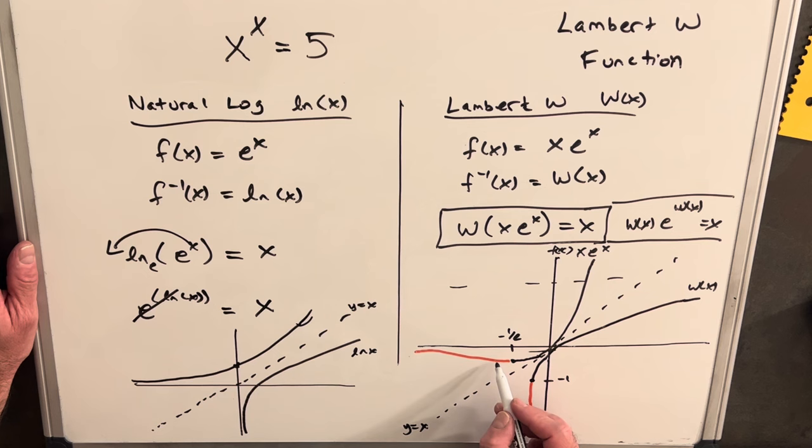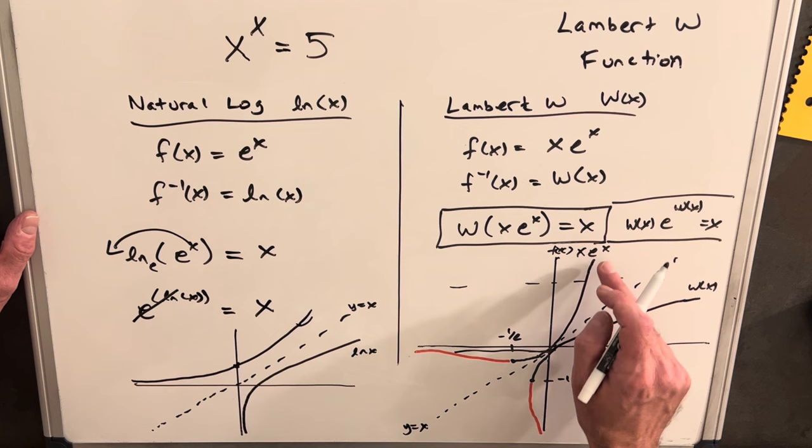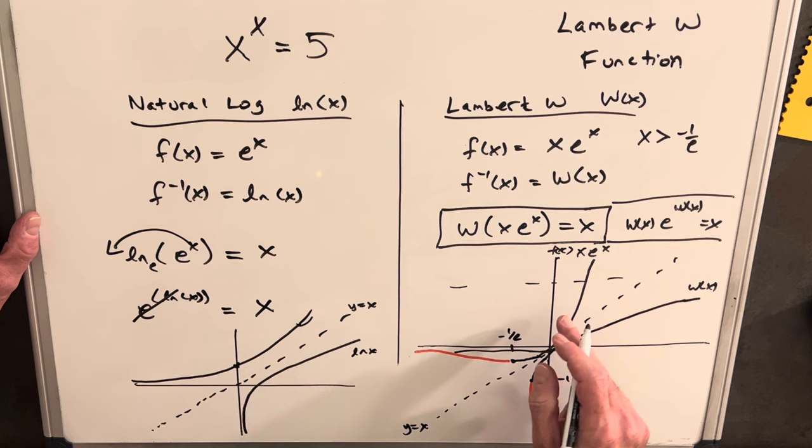And so then if we do our horizontal line test now, we hit at this red line, but I'm saying the red line is something else and we're not considering it. So now we have a function x e to the x, where x is greater than minus one over e that now passes the horizontal line test. So now we actually have a Lambert W function that is a function.